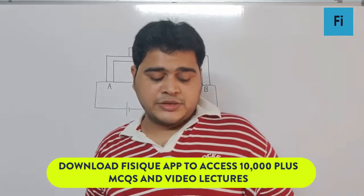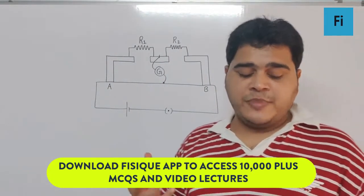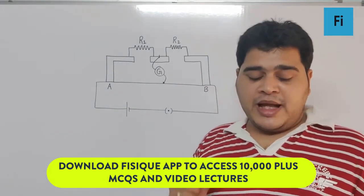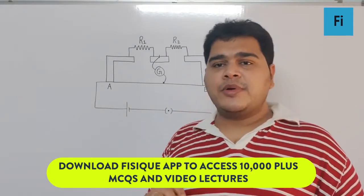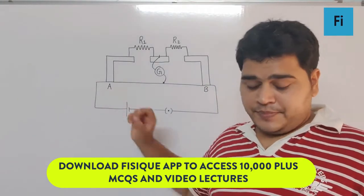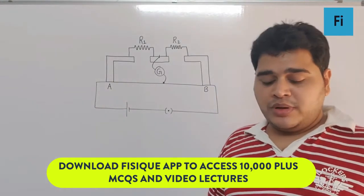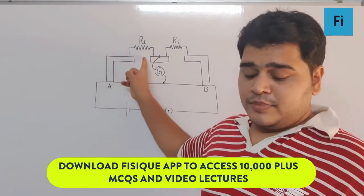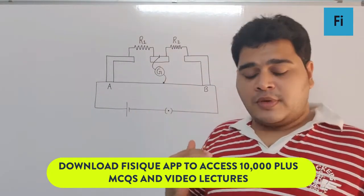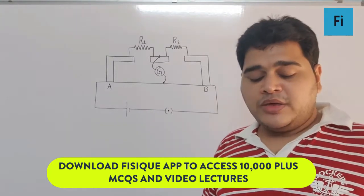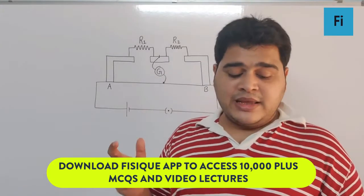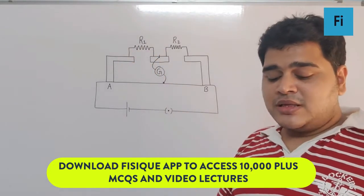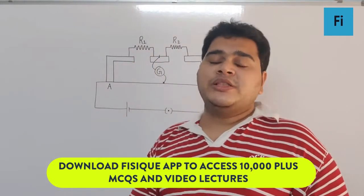The question says in the experimental setup of a meter bridge shown in the figure, the null point is obtained at a distance of 40 centimeters from point A. If a 10 ohm resistor is connected in series with R1, the null point shifts by 10 centimeters. Find the resistance that should be connected in parallel with R1 plus 10 such that the null point shifts back to its initial position.